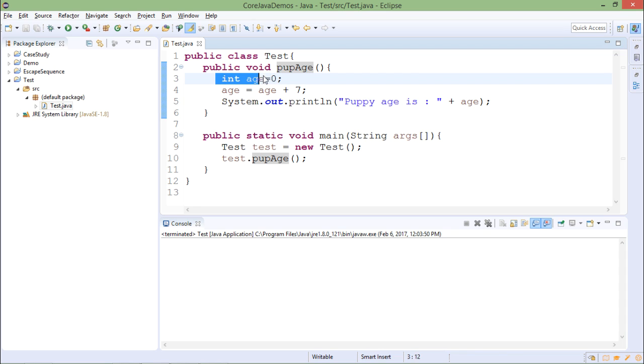Now this age variable which is declared inside definition of pupAge method is local variable of that method. Initially value is assigned 0. After that I have written some statement which is age equals to age plus 7 and then I have printed the value of age.